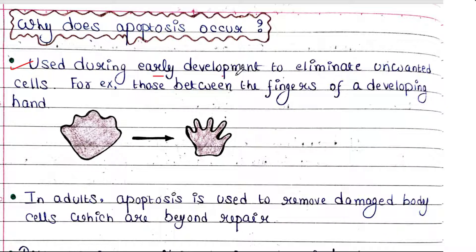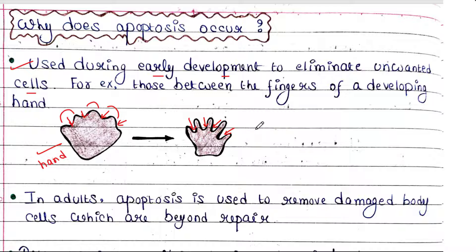Why does apoptosis occur? Apoptosis is used during early development to eliminate unwanted cells — for example, those between the fingers of a developing hand. Here you can see this is the hand being made during embryonic development. Apoptosis occurs in the gaps between the fingers because the fingers are initially all joined. Apoptosis occurs there and the fingers become separated.